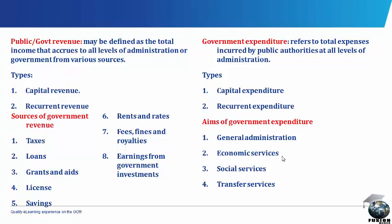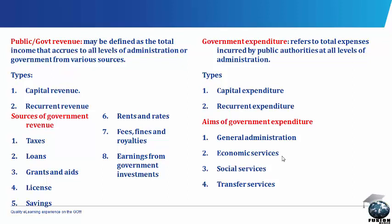8. Earnings from Government Investments — these come from public corporations and fees owned by governments. Income from the sale of refined and crude petroleum products are also sources of government revenue. 9. Royalties — that is the amount paid by mining companies to the government for the use of land for mining purposes. All these are sources of government revenue.